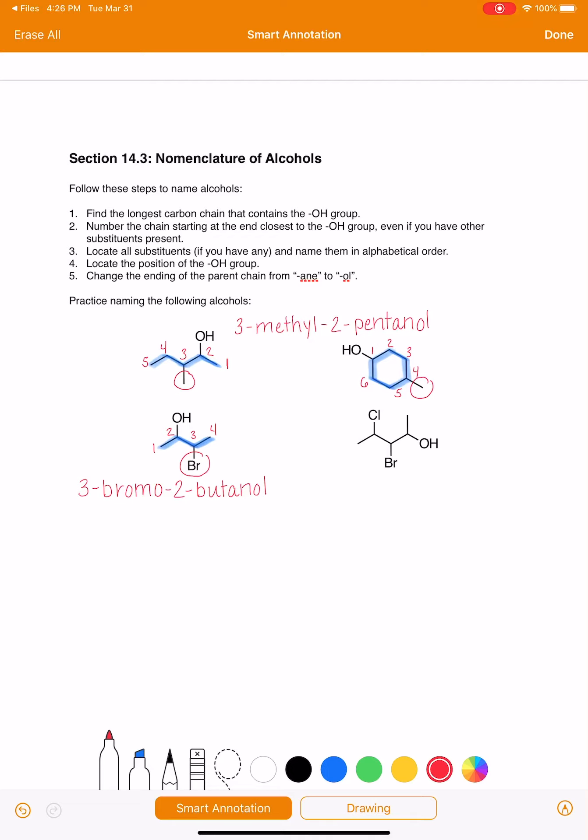We've got our carbon chain numbered. Now we need to locate our substituent and name it: methyl. The alcohol is on carbon number one. Name the parent chain. This is a cyclo with six carbons, so it's a hexane. Drop the E and change it to ol because it's an alcohol. 4-methyl-1-cyclohexanol.